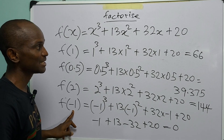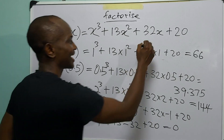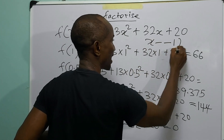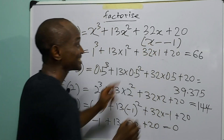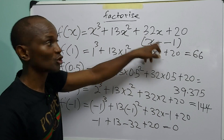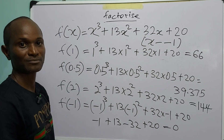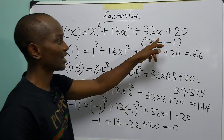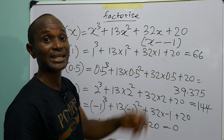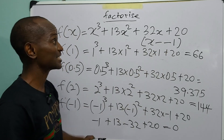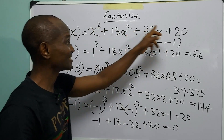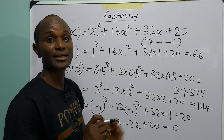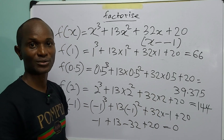So we have found that f(−1) = 0. This tells us that x minus (−1), which is x plus 1, is a factor of this expression. Now that we have found a factor, the next step is to divide this expression by this factor to find the other factors.